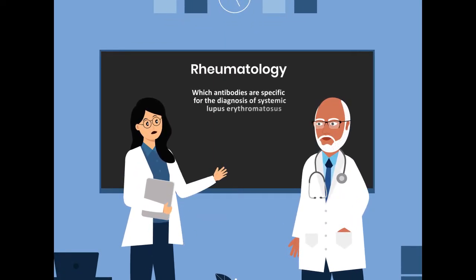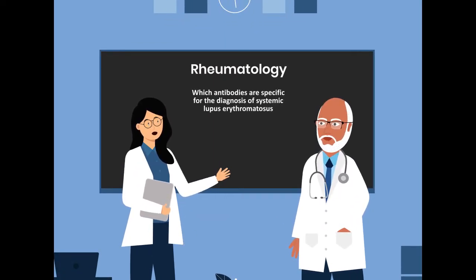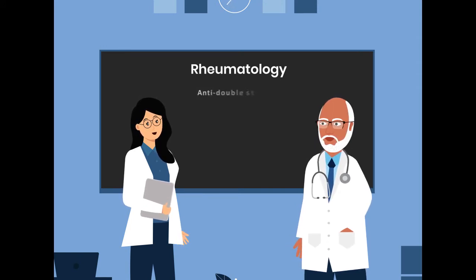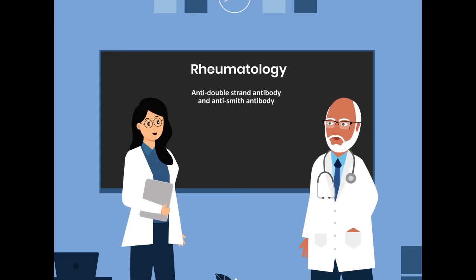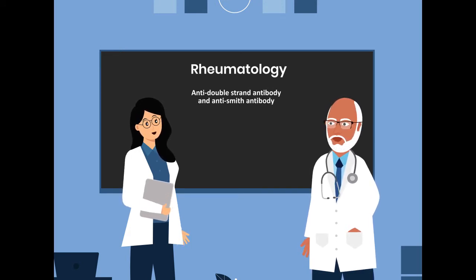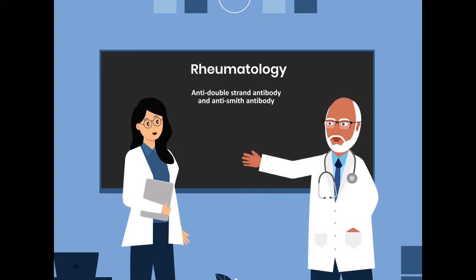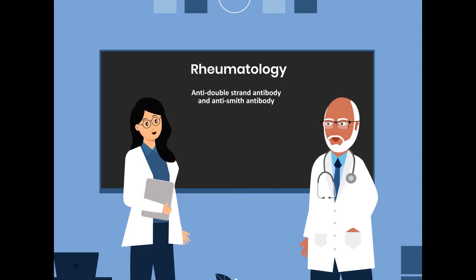Which antibodies are specific for the diagnosis of systemic lupus erythematosus? The antibodies most specific for the diagnosis of systemic lupus are anti-double strand DNA antibody and anti-Smith antibody.